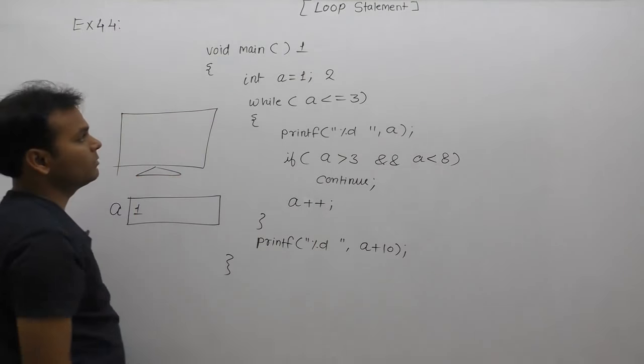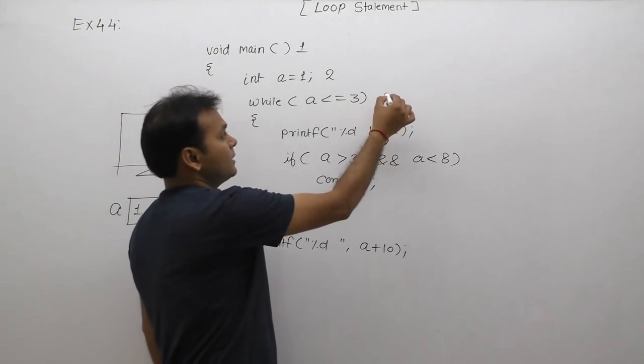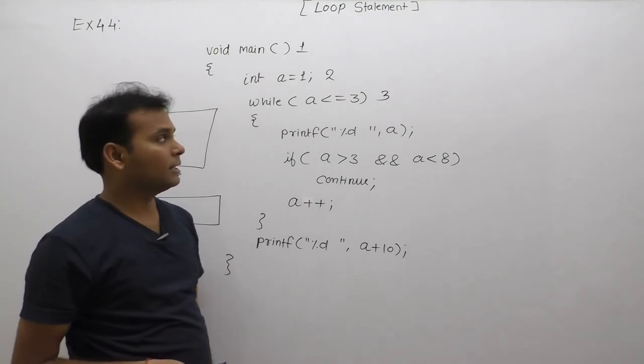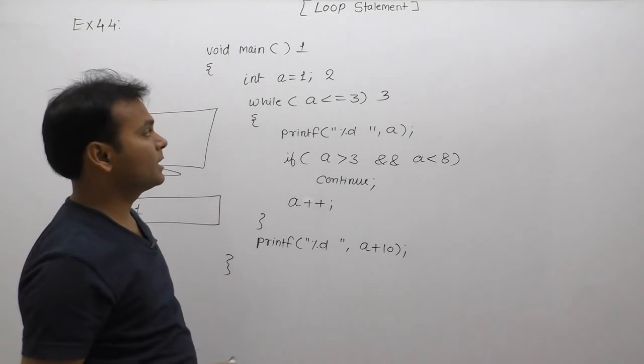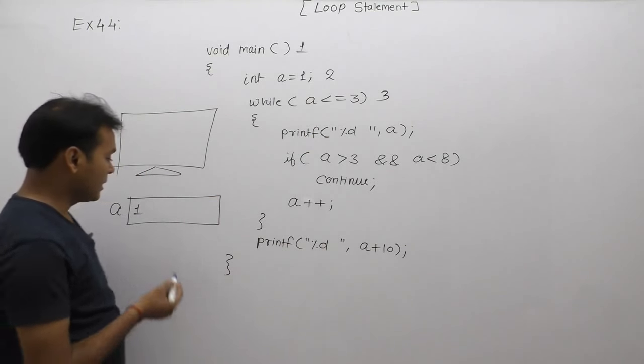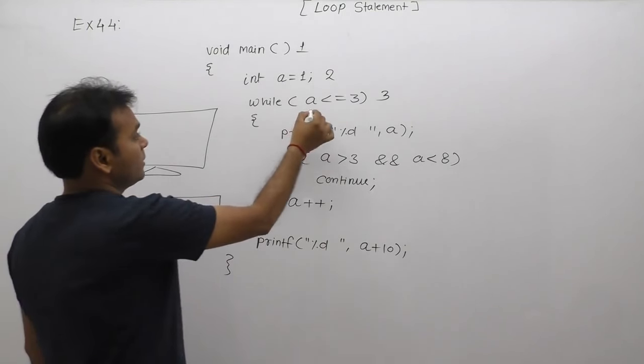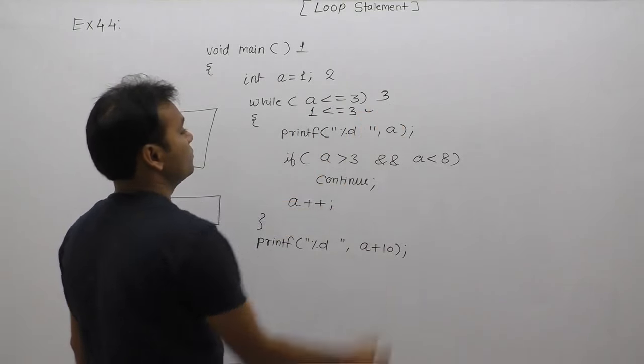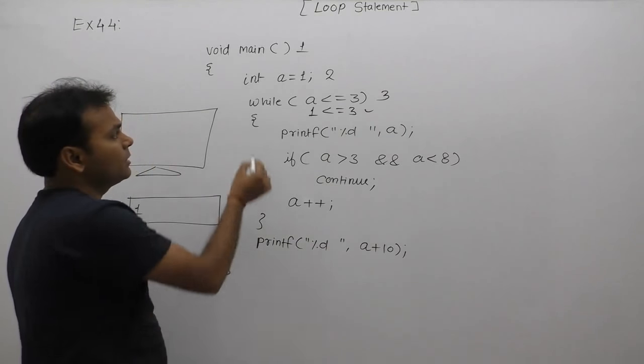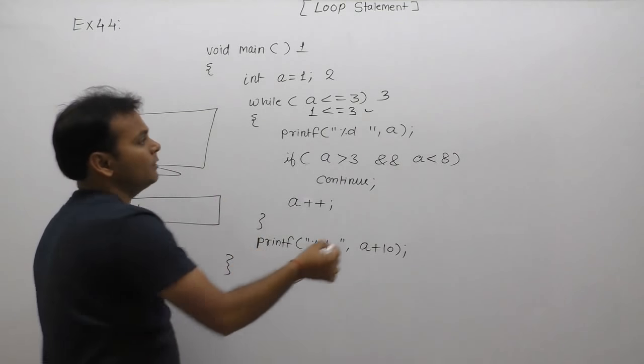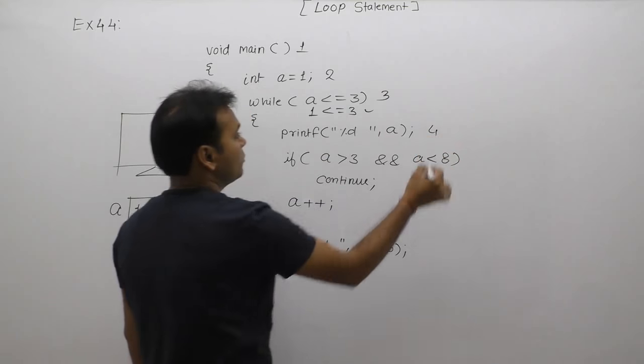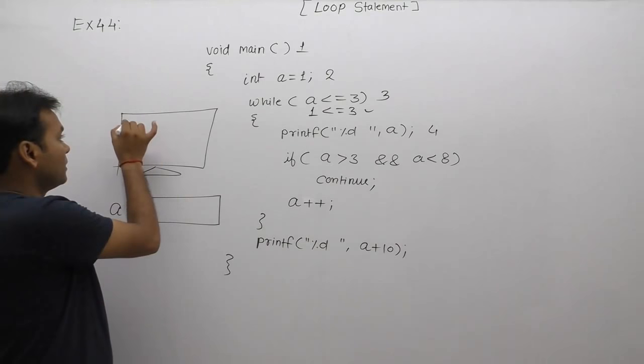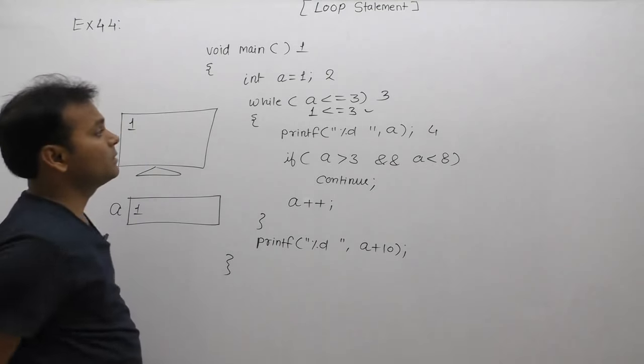Third case: condition testing. According to the condition, we replace with the new value of a. Currently value of a is 1. This case, condition is 1 less than equals to 3, condition is true. Then control sends inside body of while. Fourth statement, according to this, display the value of a. The value of a here is 1, therefore message is displayed by this printf function. Value of a is 1, 1 displayed.